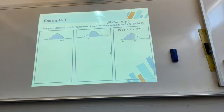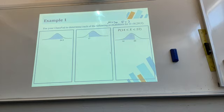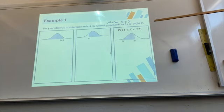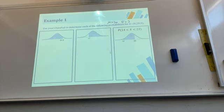Remember: the answer is 0.9332 to four decimal places — not 9, it's the square root giving you the standard deviation of 3. Four decimal places is required for probability calculations; if you're writing as a percentage, use two decimal places.